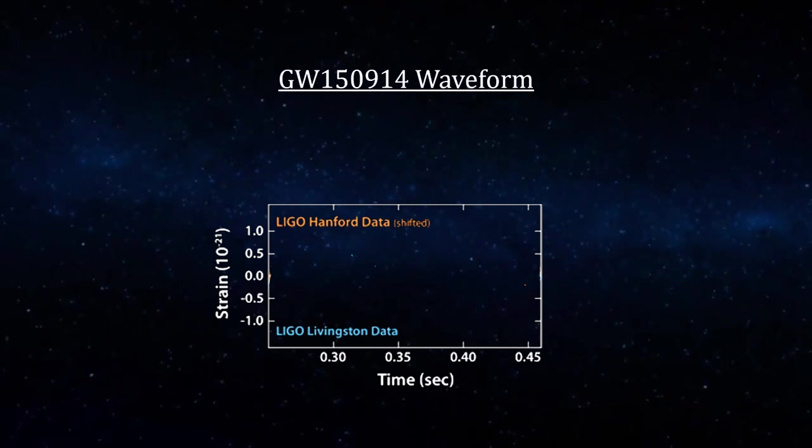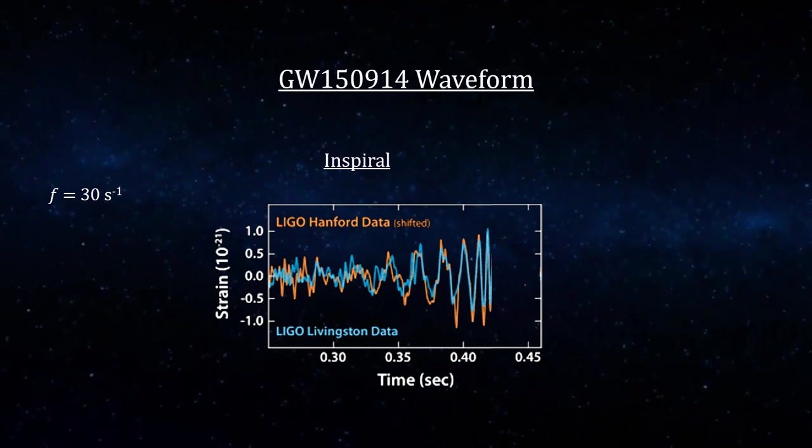This plot combines the data from both sites. The waveform is consistent with coalescing masses with a 10-cycle 200-millisecond in-spiral that gives us the frequency, the rate of change of the frequency, and a peak wave amplitude. A merger that takes around 2 milliseconds. And a ring-down as the coalesced objects cease to radiate gravitational energy.